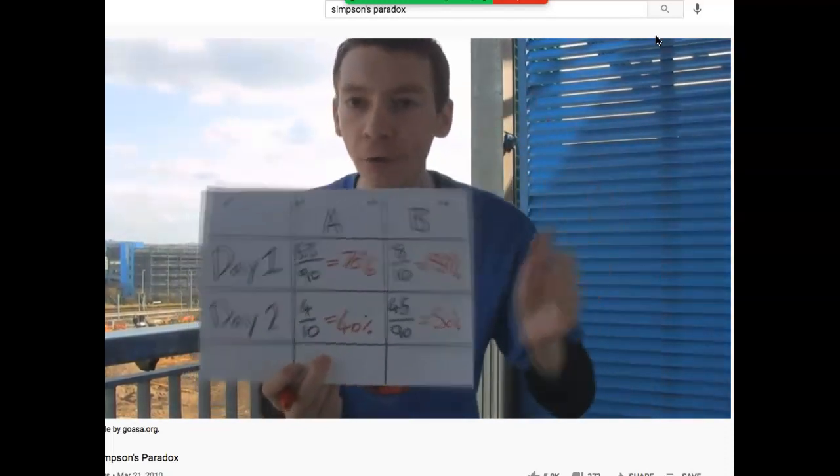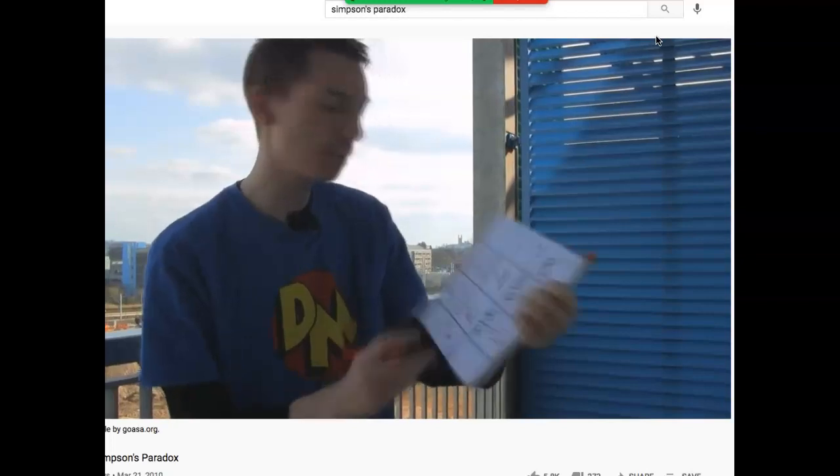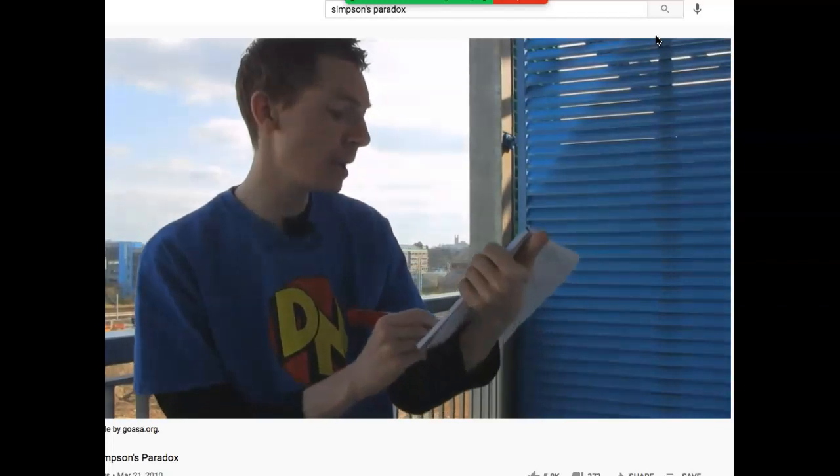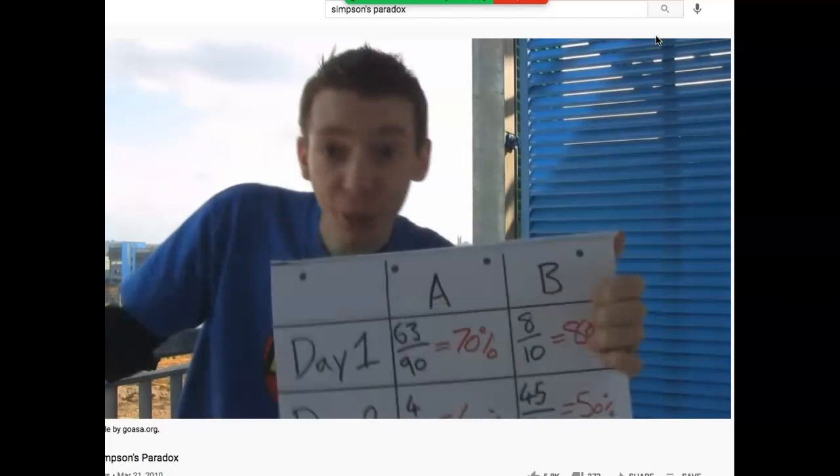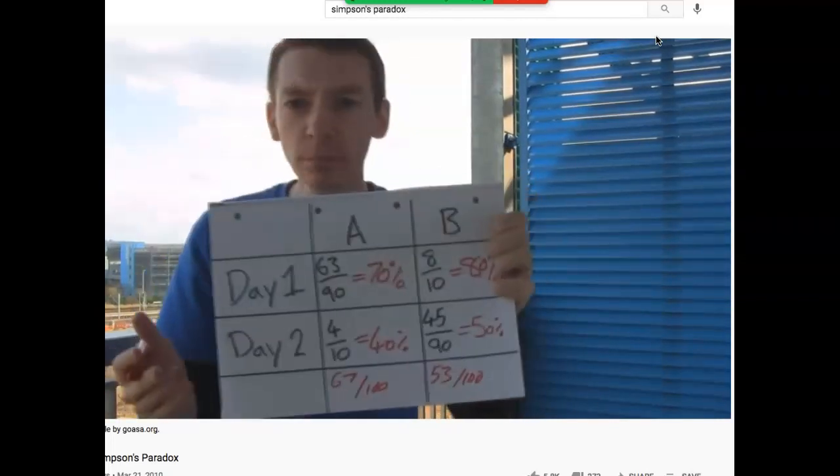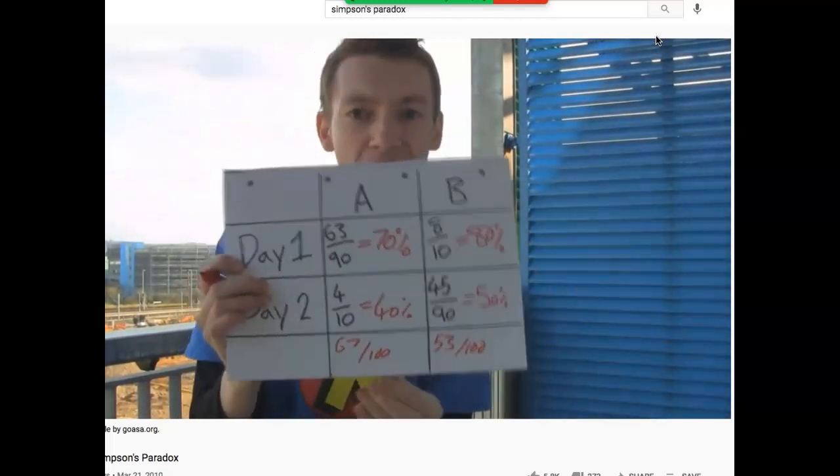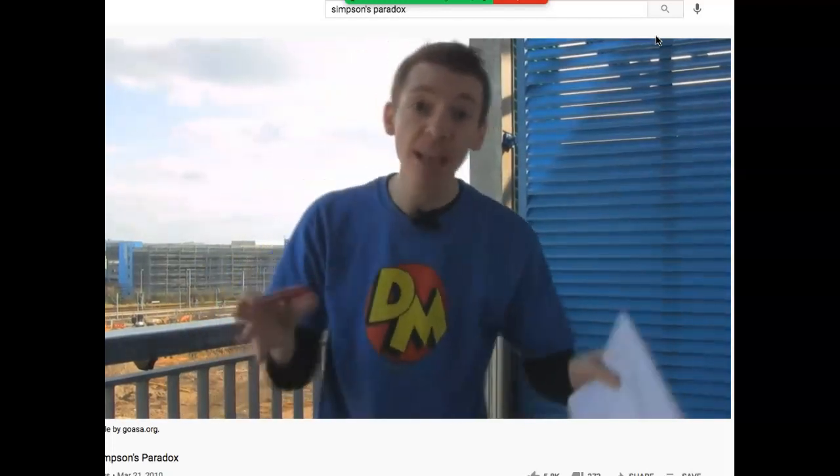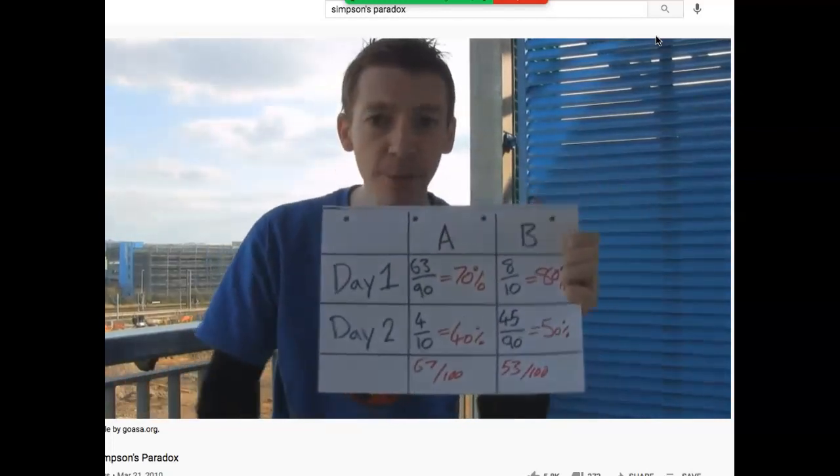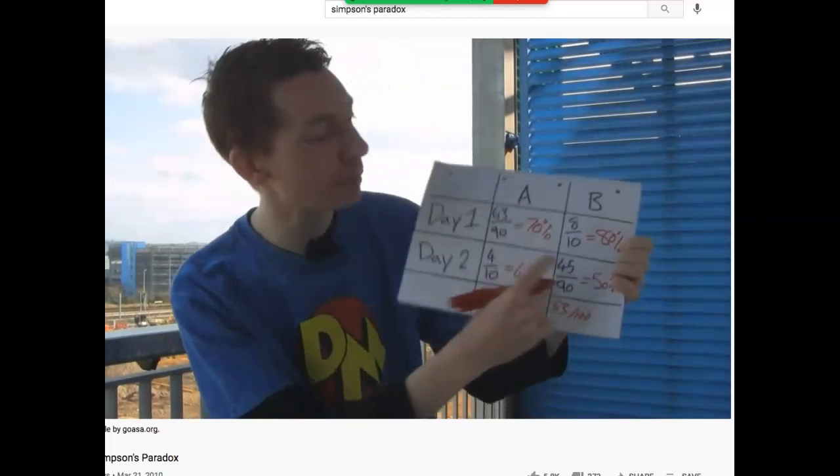But have a look overall. Drug A cures 63 people and 4 people, so it cures 67 out of 100 people, 67 percent. Drug B cures 8 people and 45 people, it cures 53 out of 100 people, so 53 percent. Overall, drug A appears to be better. It cures 67 percent versus 53 percent. So this is the paradox. Which is the better drug? Drug B appears to be better on day one and better on day two, but overall drug A appears to be better.